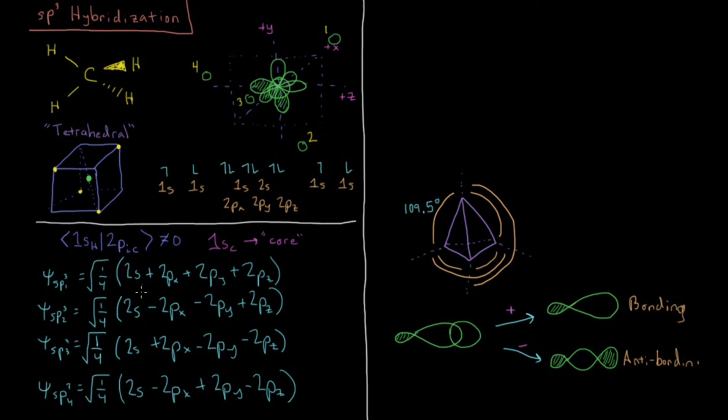And as was the case for sp and for sp2, if you compute the overlap integral between any of these pairs of combinations here, if you do psi sp3i, where i is 1 through 4, and psi sp3j, that integral of the overlap is delta ij. So they are both normalized and orthogonal. They are orthonormal, being the Kronecker delta here.